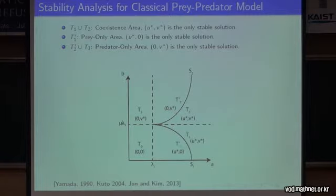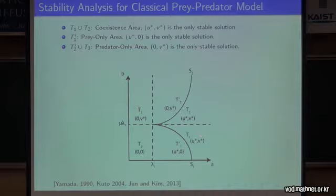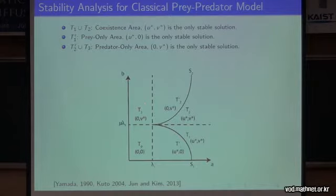There is another stability analysis for the classical prey-predator model. First of all, there are trivial solutions in the lower left side, T0. In this area, the trivial solution (0, 0) is stable. On the other hand, in the co-existence area mentioned before, the solution U* and V*, which are positive solutions, are both stable. There are also semi-trivial solutions: in one region, the predator vanishes and U* is positive — we call this the prey-only area. On the other hand, we call regions T3 and T2-prime the predator-only area. This is possible since each solution is the only stable solution in each area.